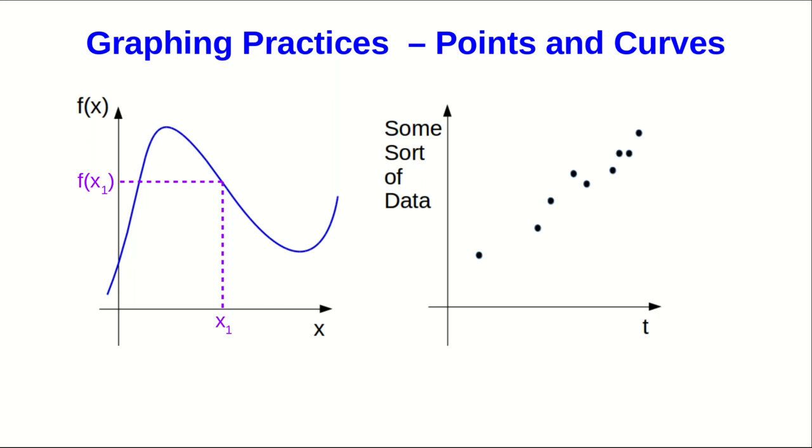However, with data, you do not draw a line through or from point to point. Think about what that would mean. It would imply that we know that if we do a measurement at some value of the independent variable, then we can predict what the data would be that we would measure. But in general, we don't know that, in particular because there will be measurement uncertainty, but also because while we may believe there is some underlying function, we might not know what it is.